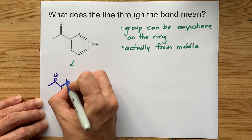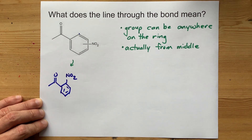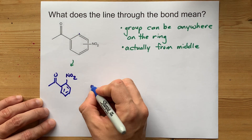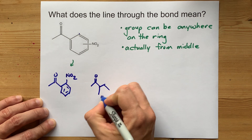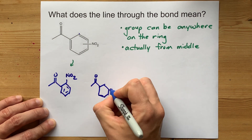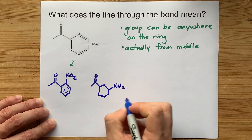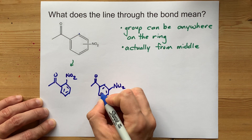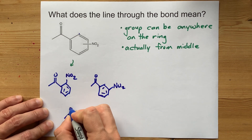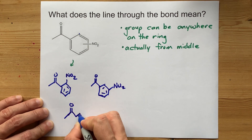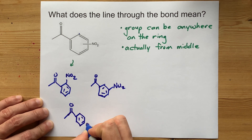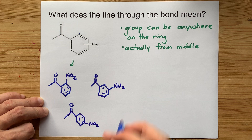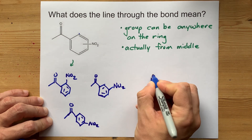I didn't think this through before deciding I was going to draw all of them for you. It could have just as easily, or with equal chance, have been here. That's an NO2. I'm going to keep going. Benzene ring. That NO2 could have been sticking out of that bond.